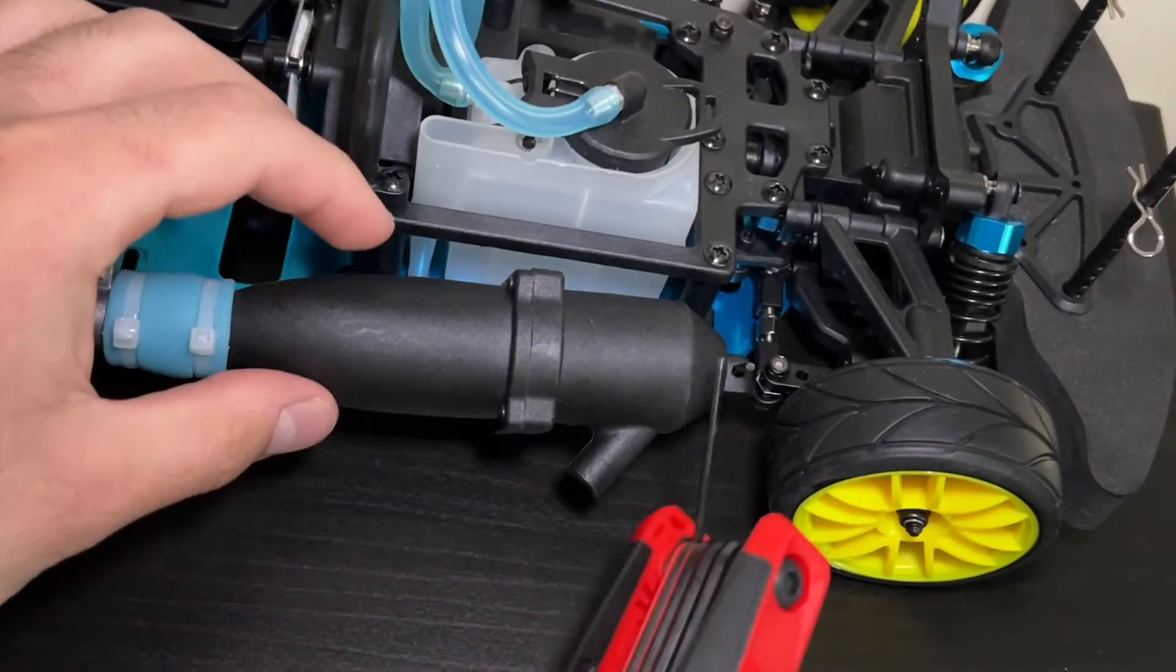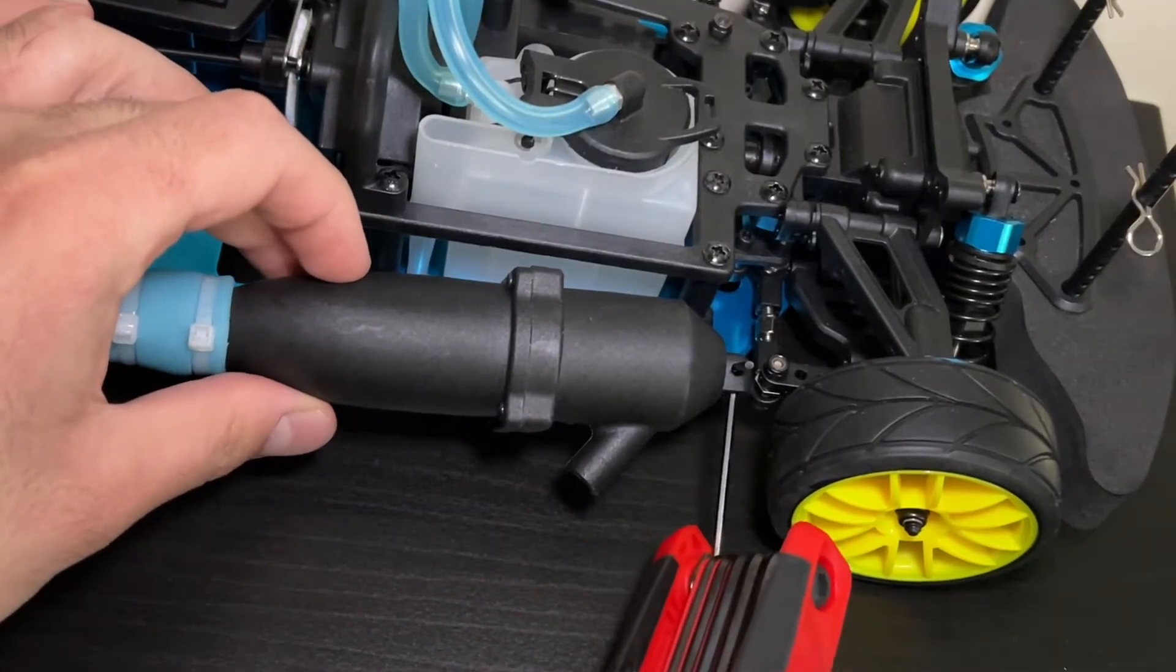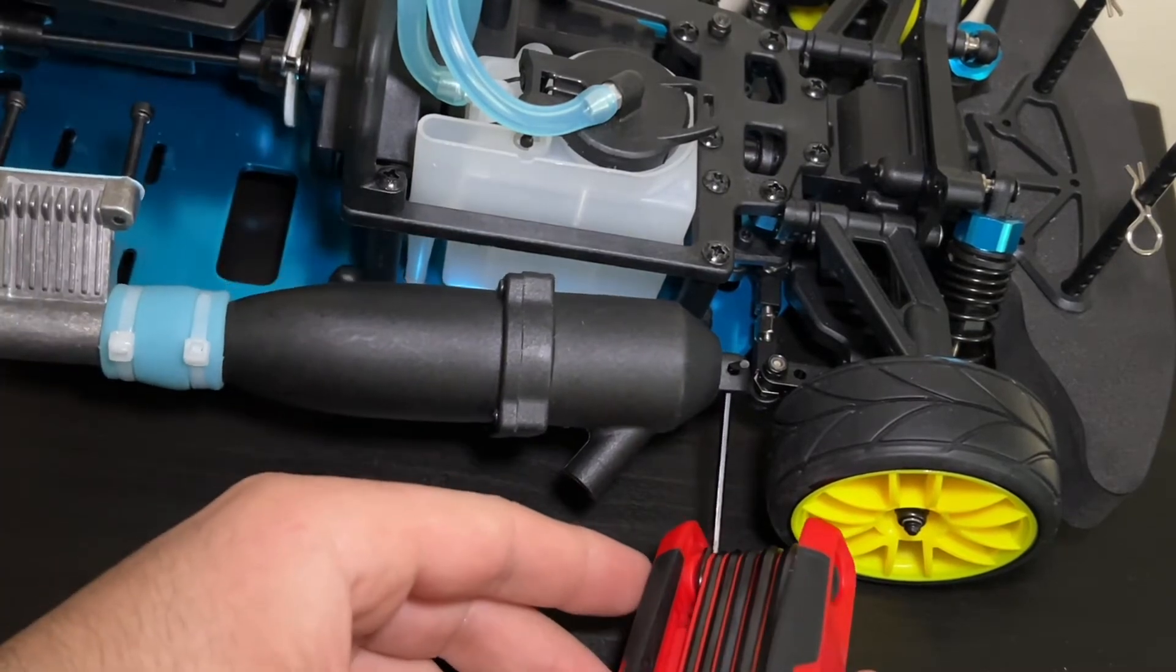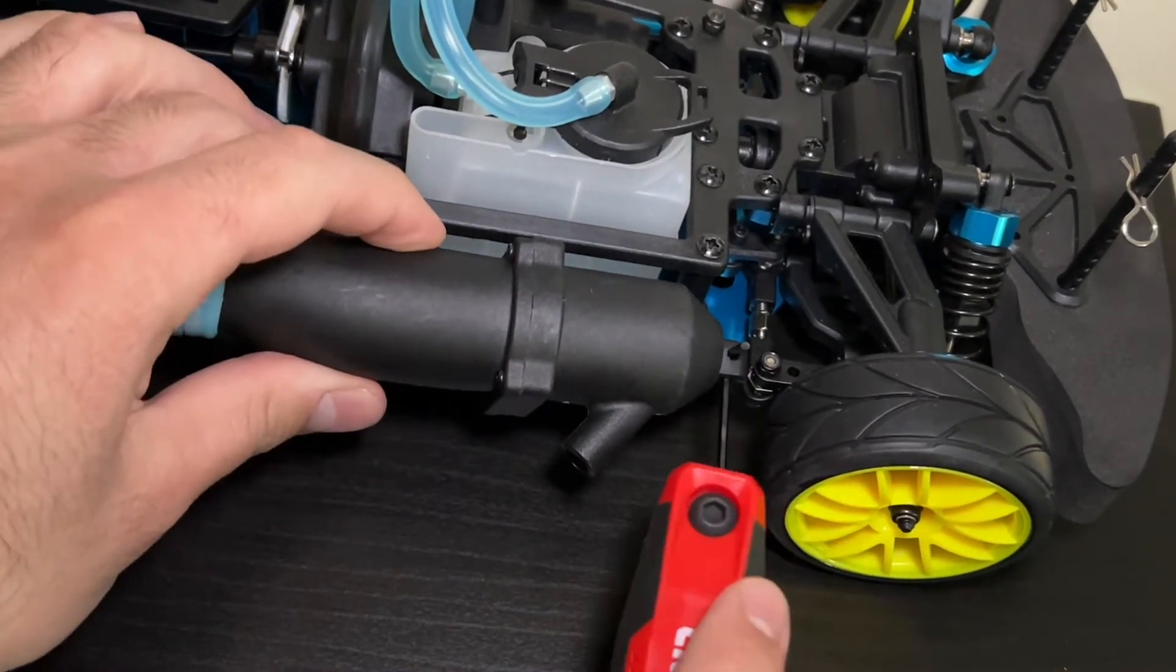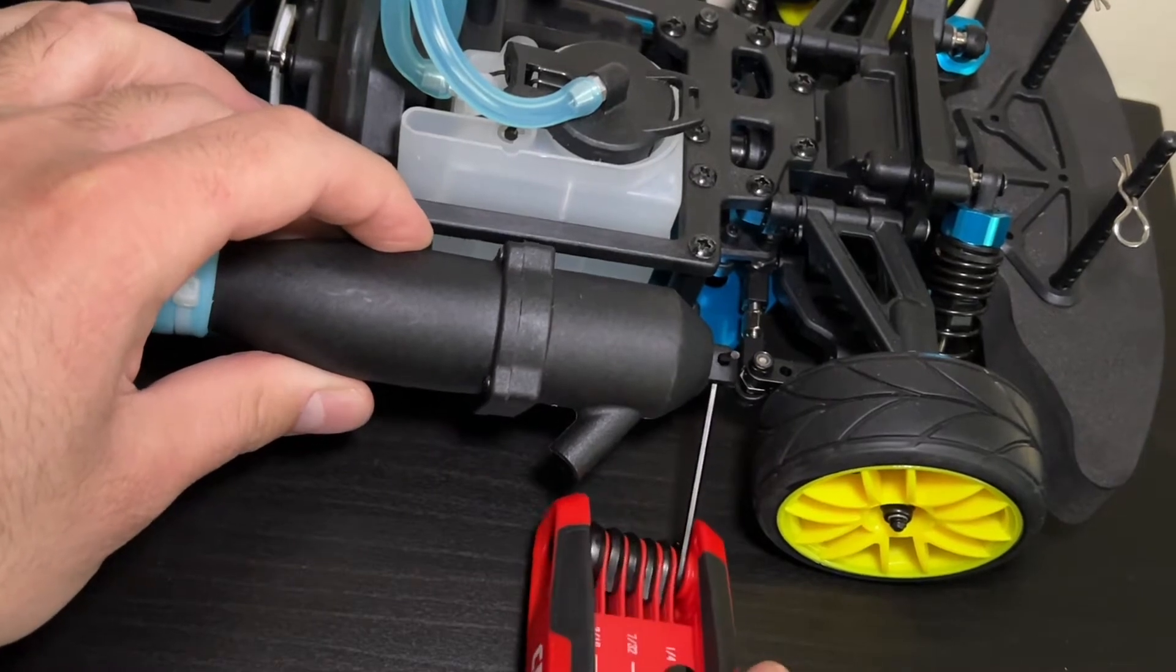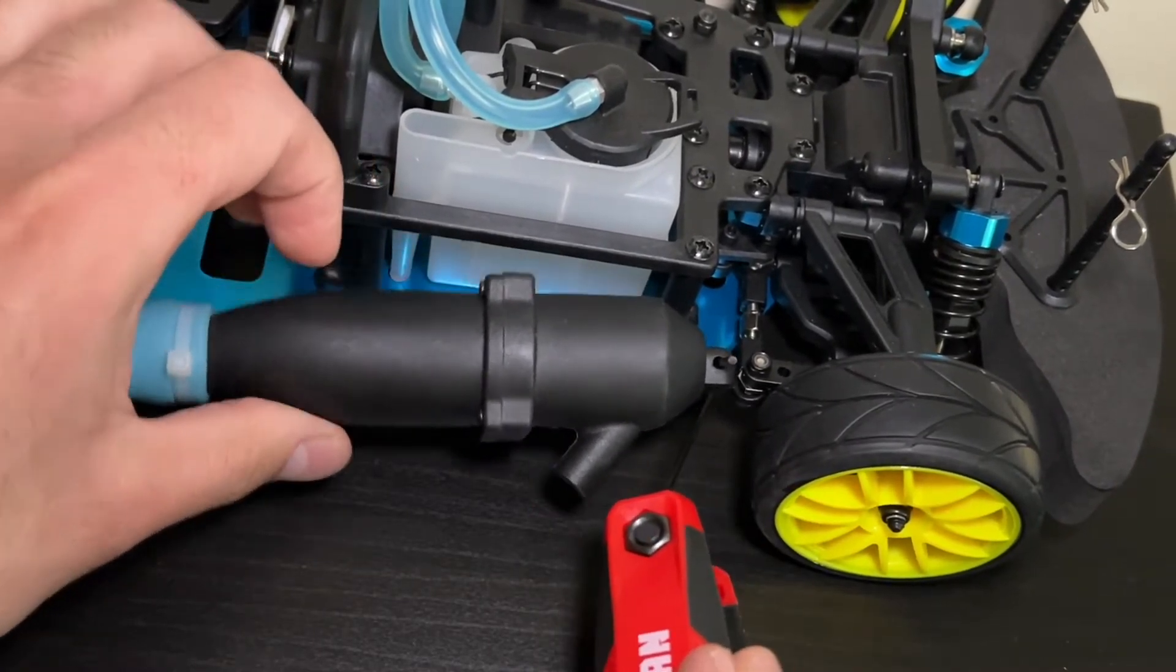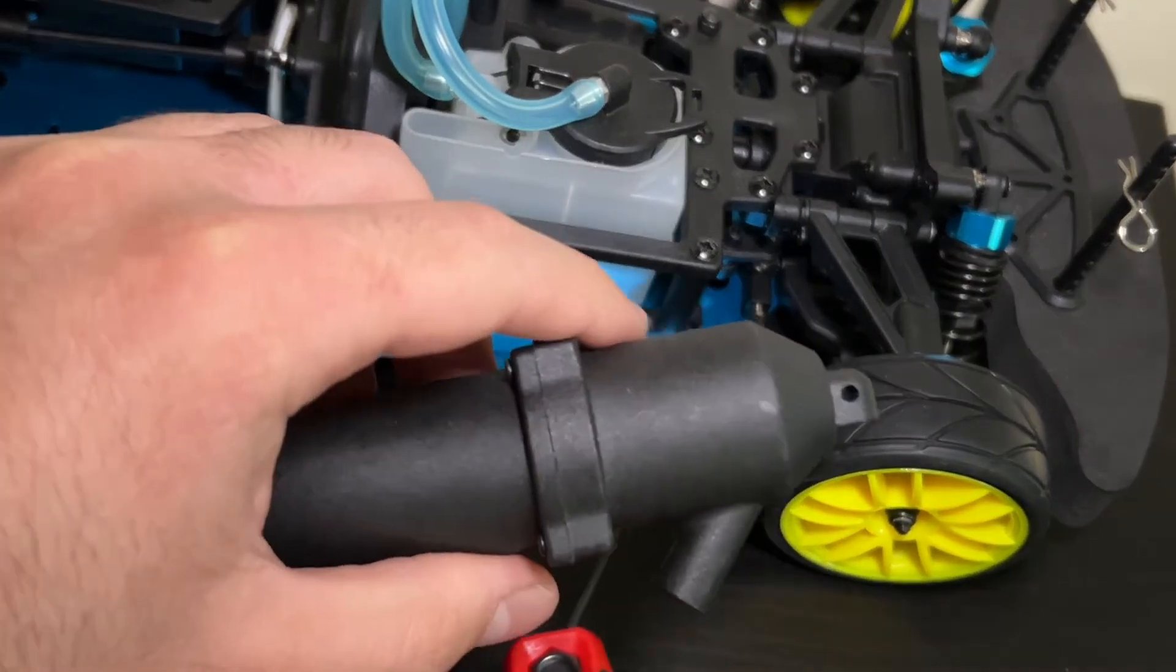I'm going to use my allen wrench to loosen the set screw and the whole exhaust assembly should come off. I just need to turn the set screw and this will loosen the exhaust and it should come out just like this.